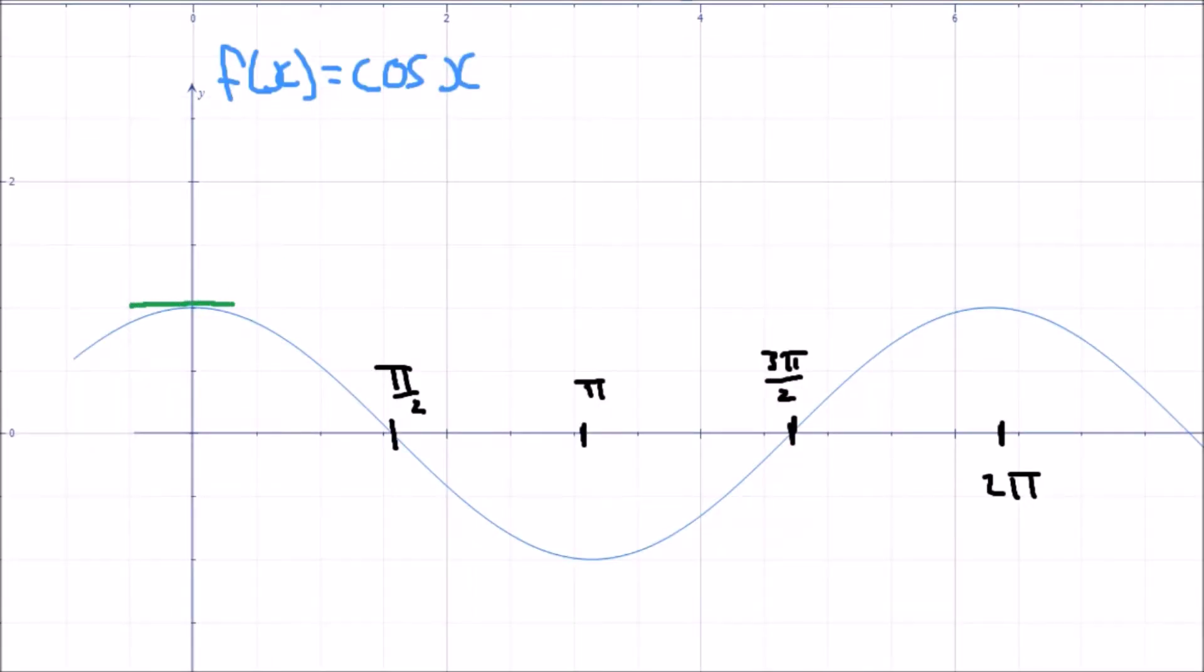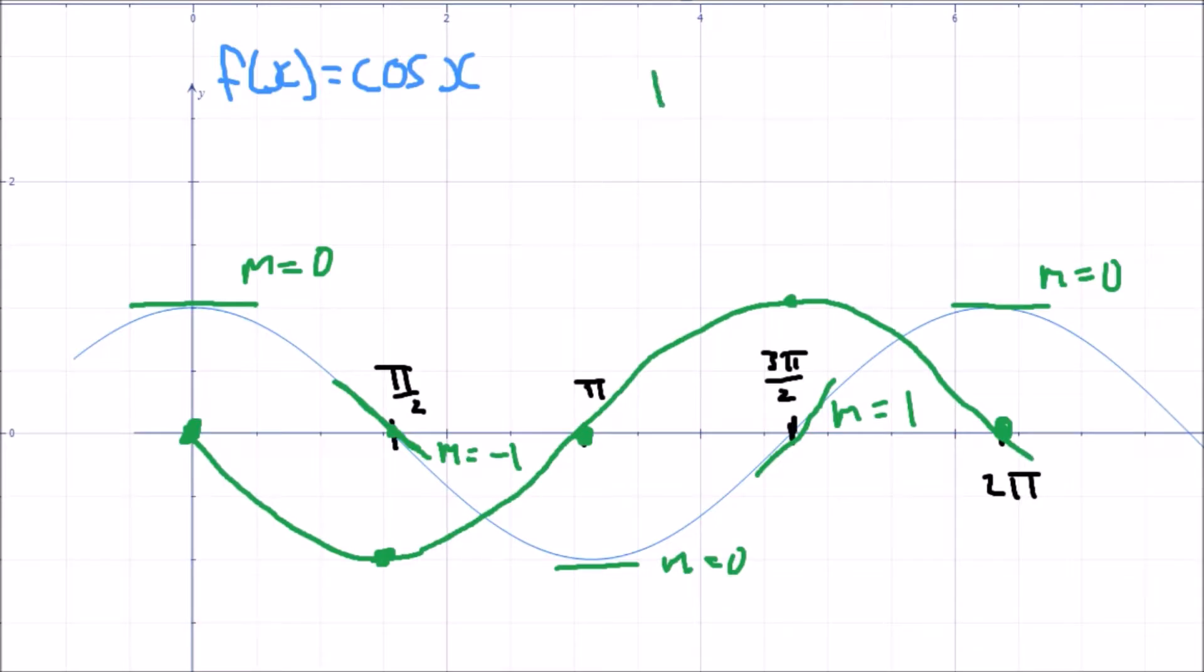Now, examining the cosine curve, we see it starts with a slope of zero at the origin. Then the slope is minus one at pi over two, slope is zero at pi, and positive one at three pi over two. This distinctly looks like a negative sine x curve since it has a value of minus one at pi over two instead of positive one.